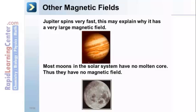On the other hand, most moons in the solar system have no molten core. Since they're small, they have cooled off. Thus, they have no magnetic field.